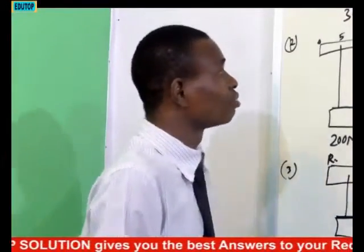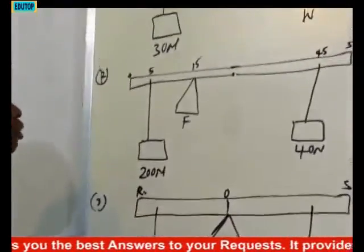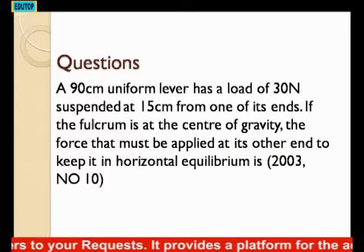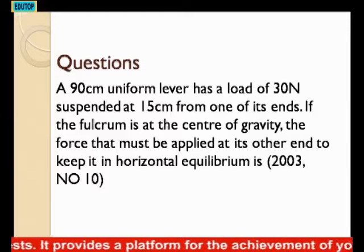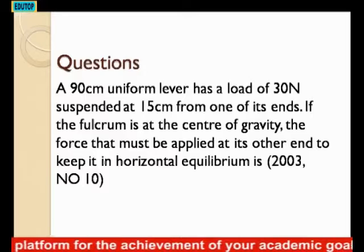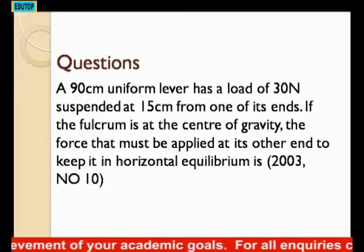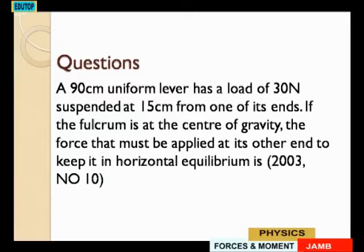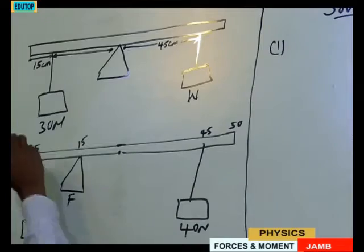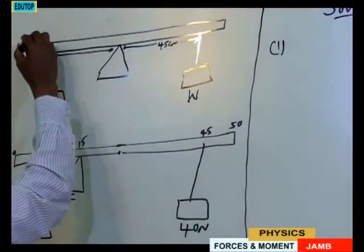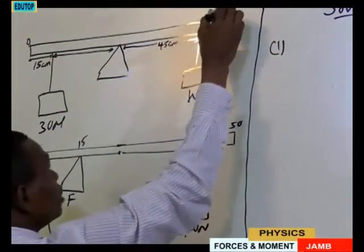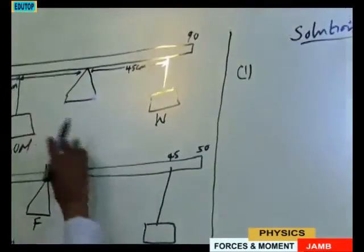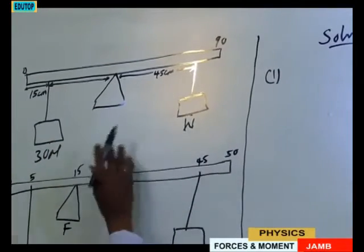Let's consider question number one. We have the following diagram on the board. Question number one says: a 90 cm uniform lever has a load of 30 N suspended at 15 cm from one of its ends. If the pivot is at the center of gravity, the force that must be applied at its other end to keep it in horizontal equilibrium is — that is year 2010, question number 10. We have the diagram here. This is our uniform lever. The total length of the uniform lever is 90 cm, from 0 to 90, and it is pivoted at the center. We have two loads or two weights that hang on this uniform lever.